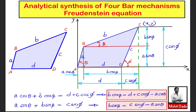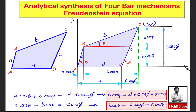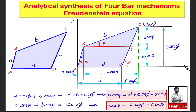You can reach the x-coordinate from the origin in two ways: one is link length d plus c·cos(φ). Alternatively, it is a·cos(θ) plus b·cos(β), where θ is the angle of the input link with the horizontal, φ is the angle of the output link, and β is the coupler angle. Setting these equal and rearranging: b·cos(β) = d + c·cos(φ) − a·cos(θ). Call this Equation 1.